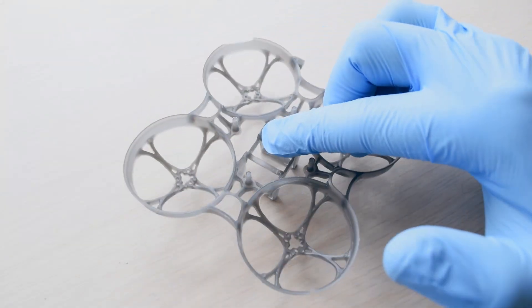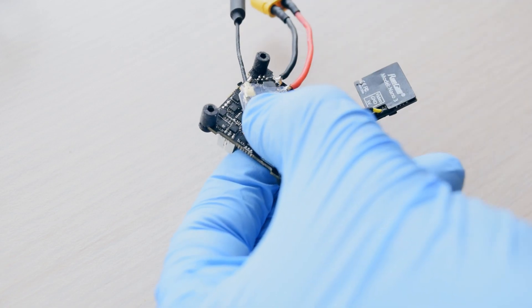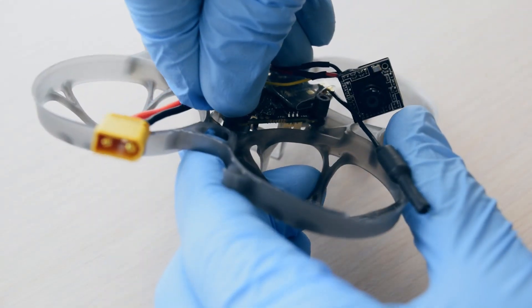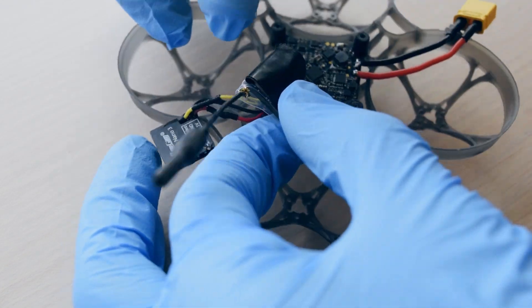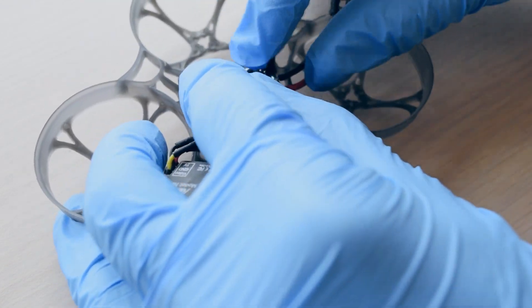At this point, I pulled out the new frame and added some standoffs on the flight controller so that I can mount it to the frame. I also used a bit of electrical tape to secure the VTX to the top of the flight controller.